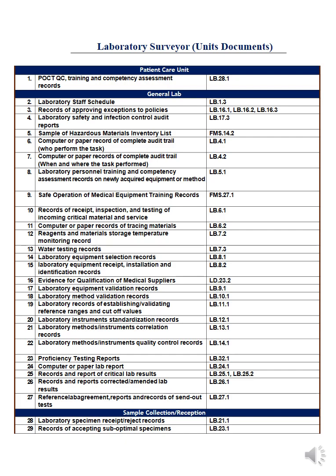Moving to number twenty-eight in this section: laboratory specimen receipt and rejection records. Show me the receipt record and the rejection record — if you rejected any samples, show the record including what samples were rejected, why, the date, by whom, whether the requesting department was notified, and whether a new sample was requested. Number twenty-nine is the record for accepting suboptimal specimens, which covers exceptions. This concludes everything related to the general lab.